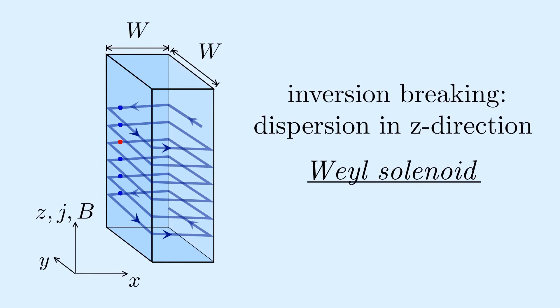In equilibrium, this surface current is canceled by a bulk current in the opposite direction. In a non-equilibrium situation, however, due to an oscillating magnetic field, these currents no longer have to cancel.